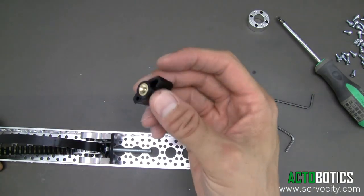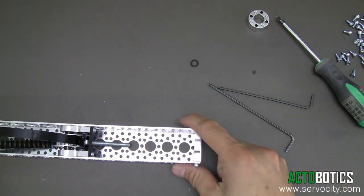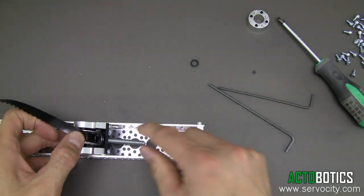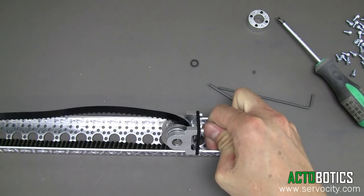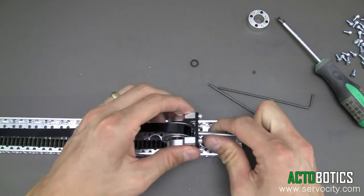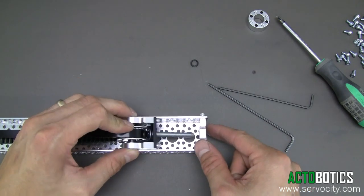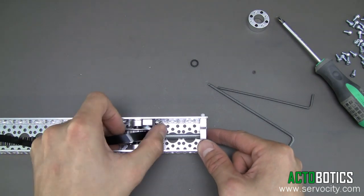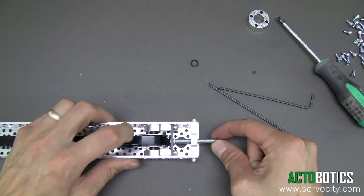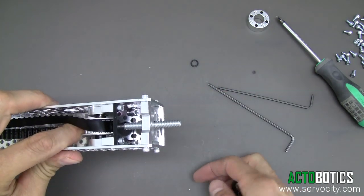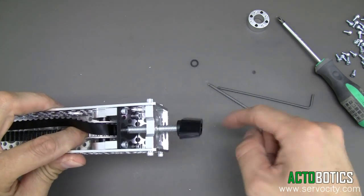Next we're going to grab our quarter-twenty thumb screw, or finger screw, bring it in and slide it all the way down to the end. Now we're going to run this quarter diameter bolt all the way through, just like this.